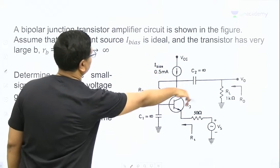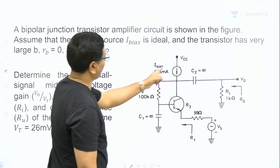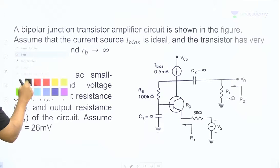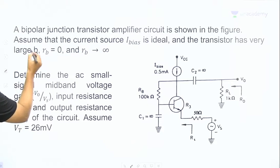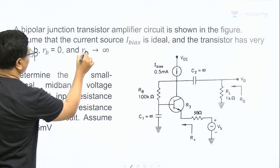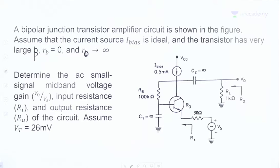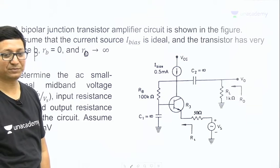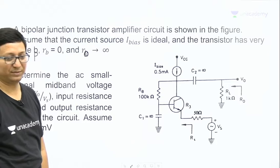A bipolar junction transistor amplifier circuit is shown in the figure. Assume that the current source I_bias is ideal. The transistor has very large beta. R_B, the base internal resistance, is zero, and R_O, the output resistance, is infinite. Determine the AC small signal midband voltage gain V_out/V_s, input resistance R_i, and output resistance R_O. The thermal voltage V_T is given as 26 millivolts.